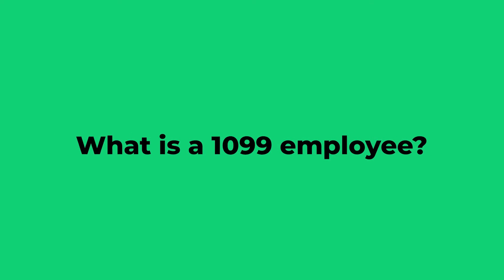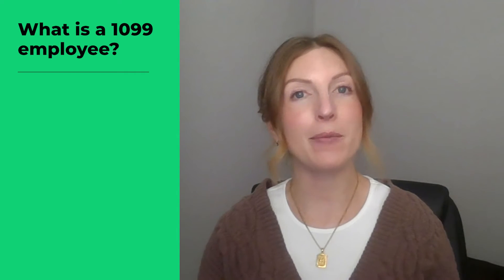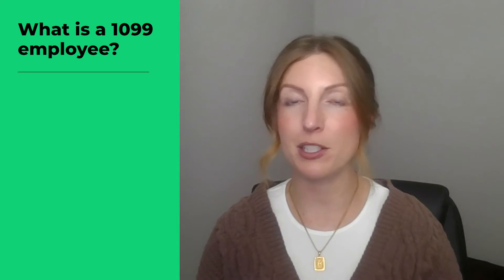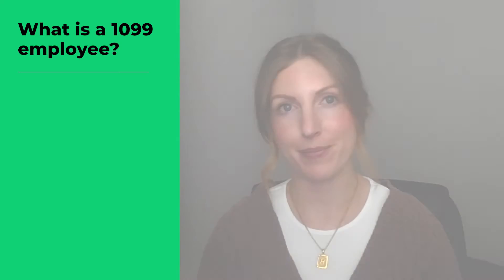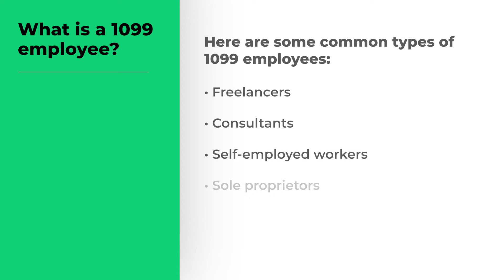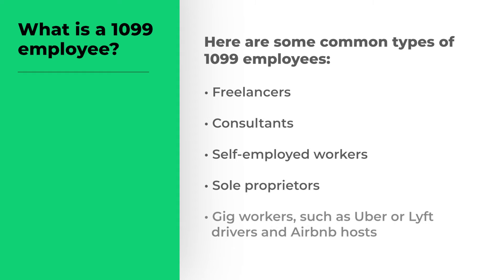A 1099 employee is an independent contractor. The name comes from IRS Form 1099, which contract workers must complete to report their earnings. Here are some common types of 1099 employees: freelancers, consultants, self-employed workers, sole proprietors, and gig workers such as Uber or Lyft drivers and Airbnb hosts.